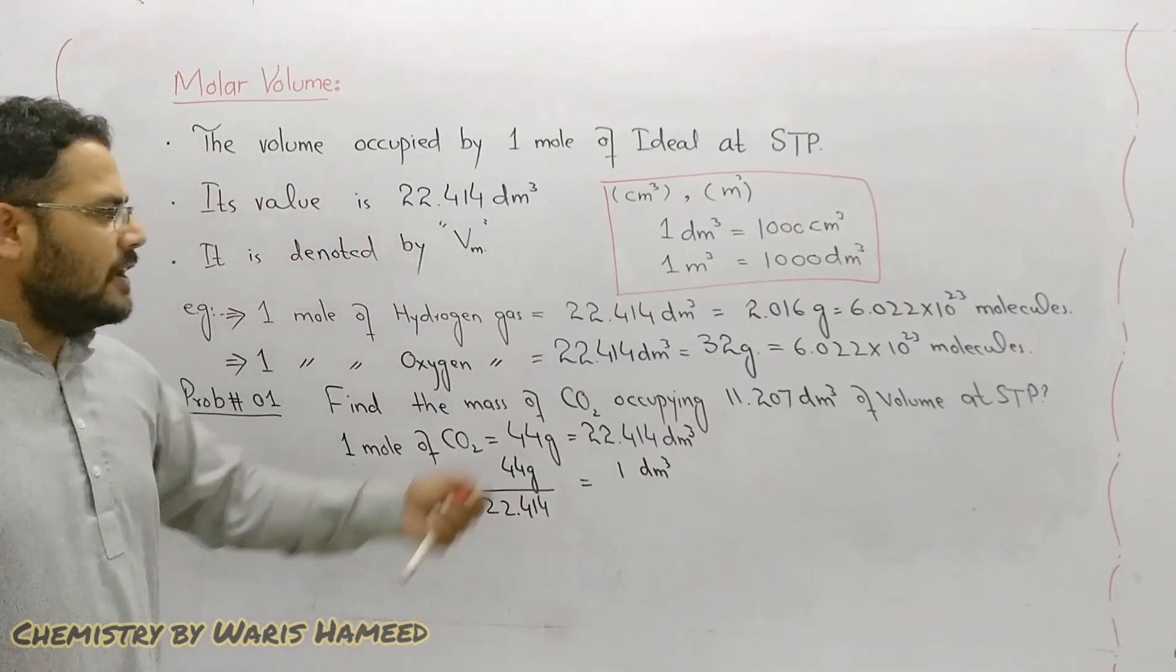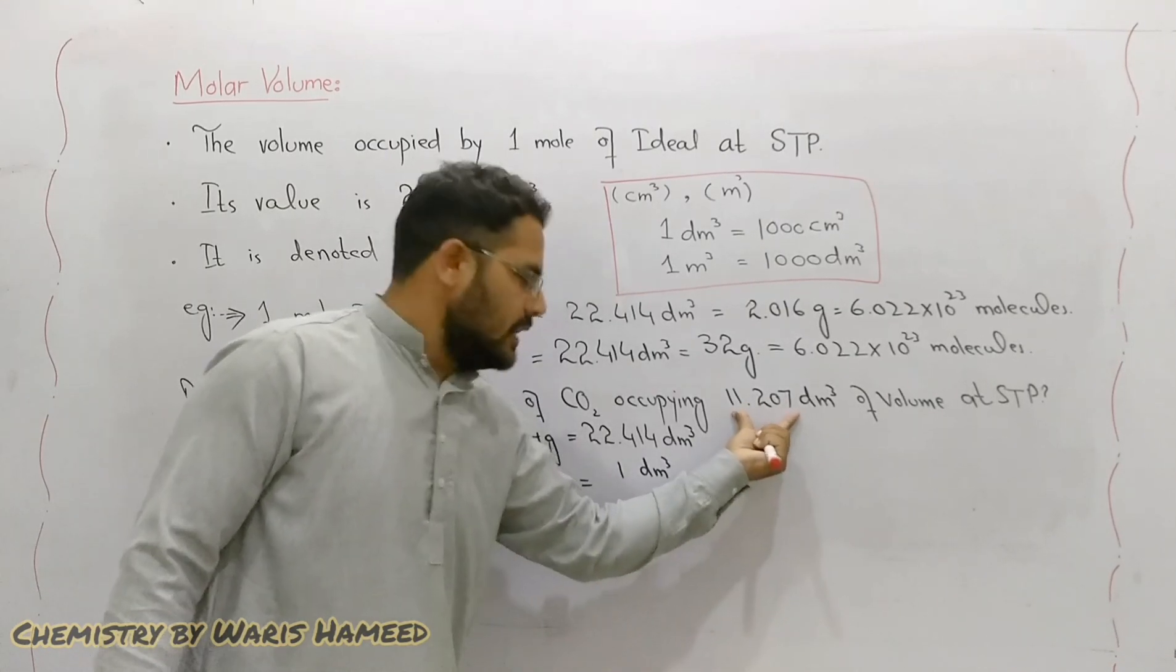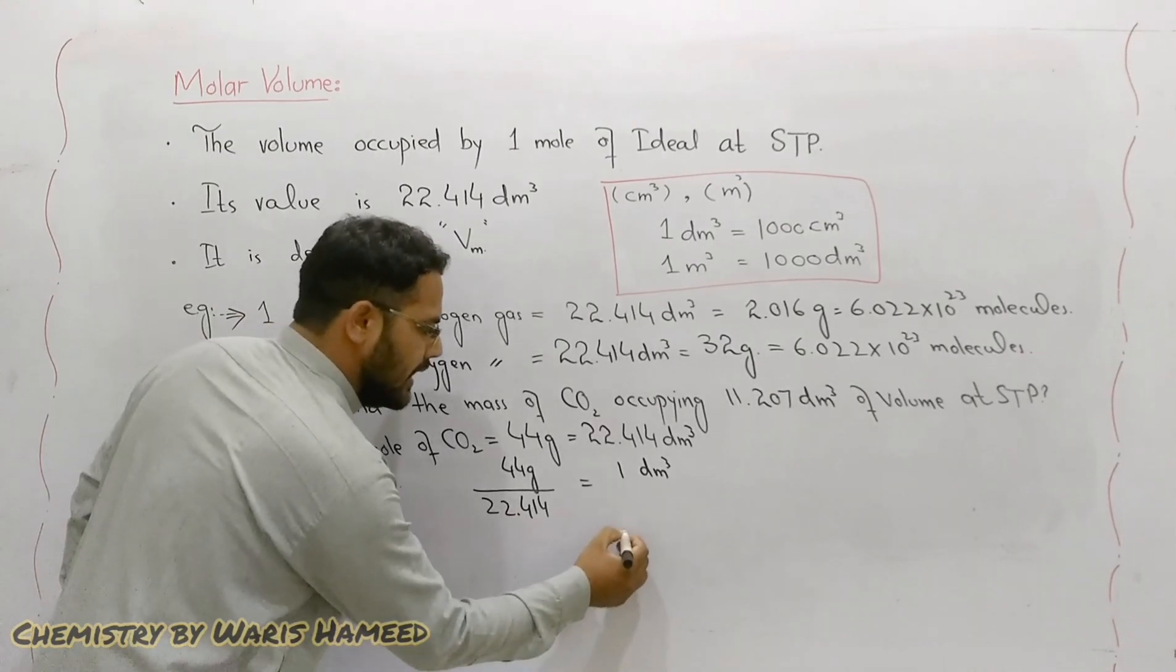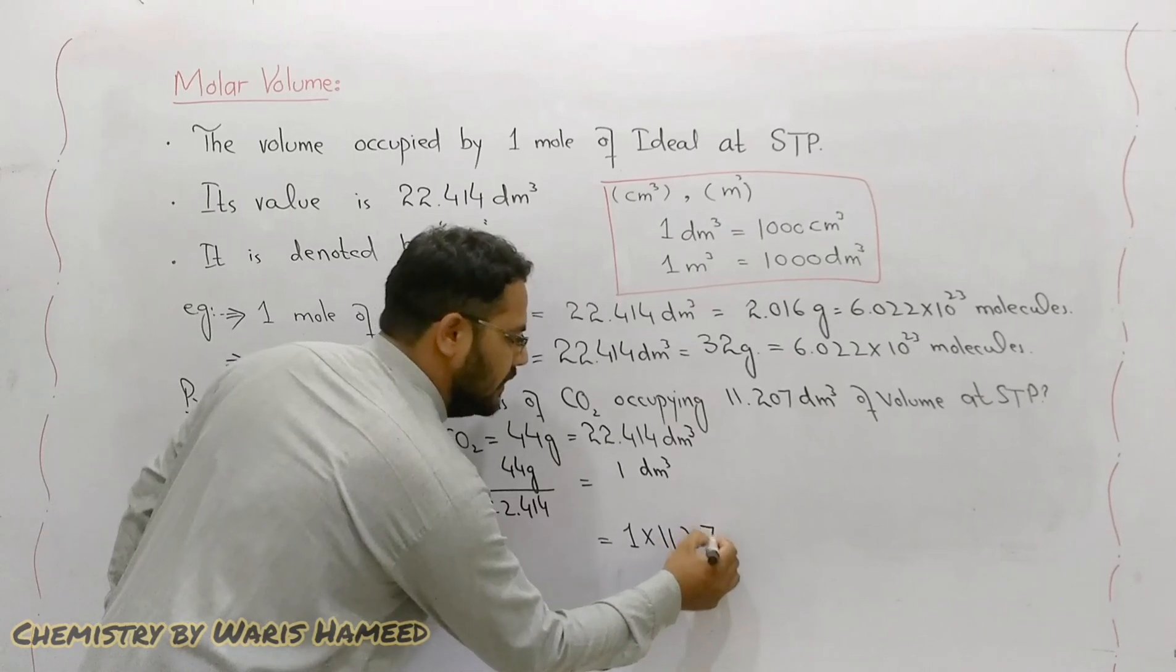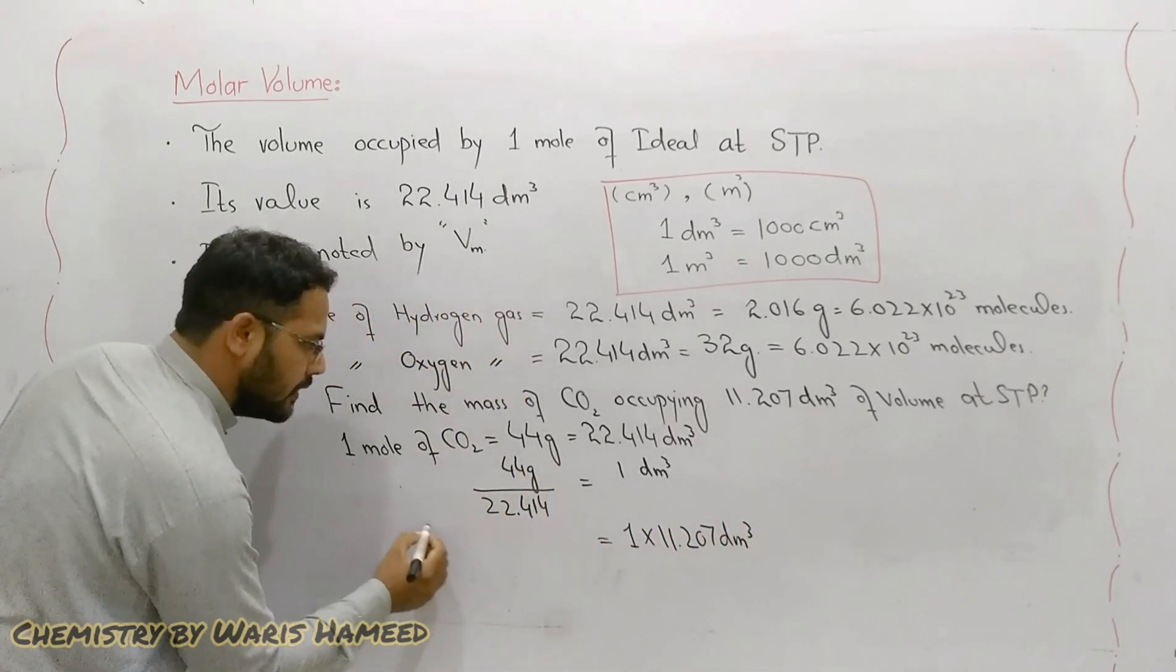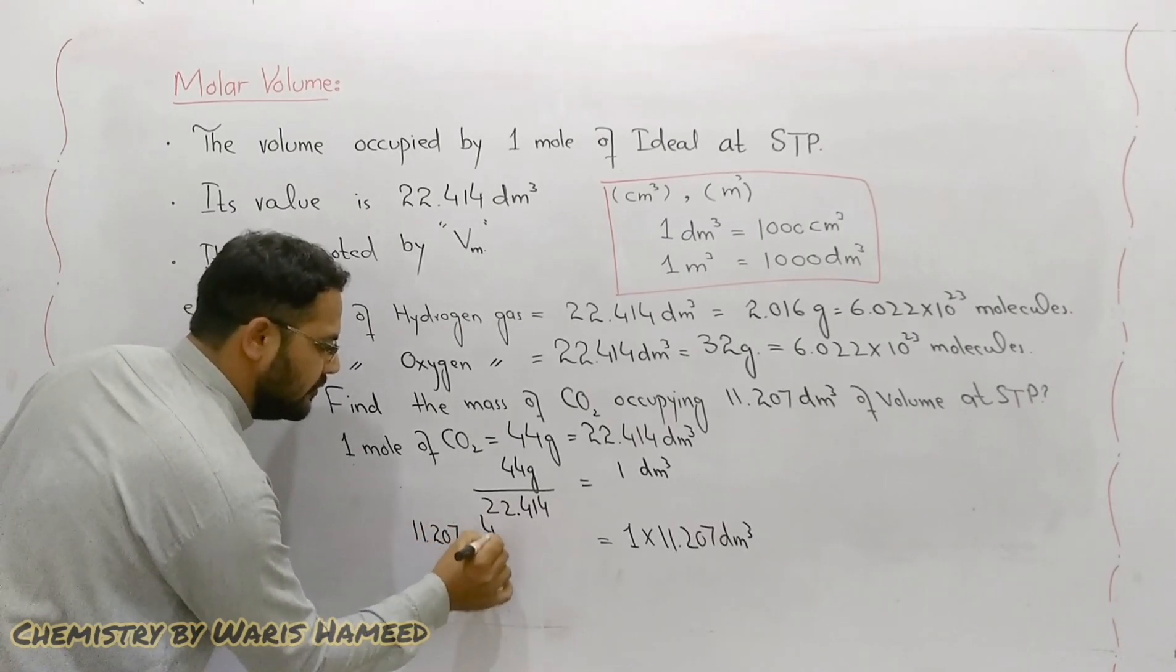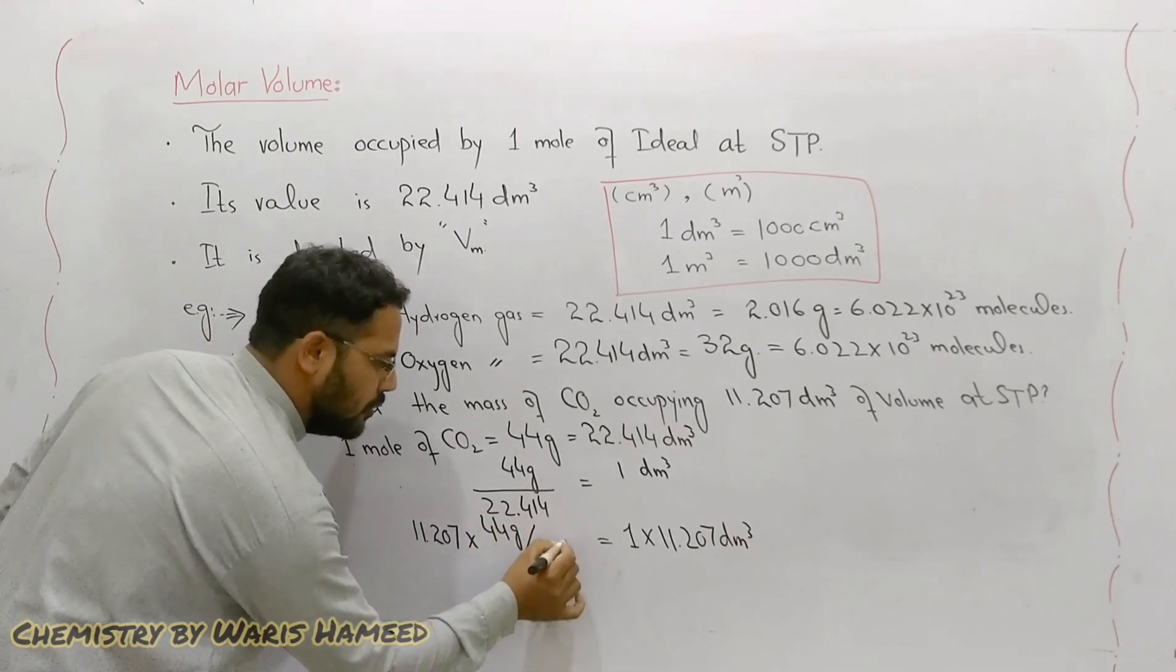And for 11.207 dm³ we will multiply this with both sides of the equation. So 11.207 dm³ will be 11.207 multiplied by 44 grams divided by 22.414.